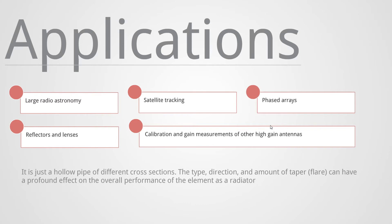Moreover, due to the behavior of the horn antenna, some applications are: large radio astronomy, satellite tracking, phased arrays, reflectors and lenses. And also, horn antennas are used for calibration and gain measurements of other high gain antennas.